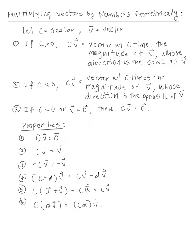Now we're going to multiply vectors by scalars geometrically. Let C be a scalar. If C is positive, C times vector V is the vector with C times the magnitude of V, whose direction is the same as V. If C is negative, CV has C times the magnitude of V but the opposite direction of V. If the scalar is 0 or the vector is 0, scalar times vector gives the zero vector.